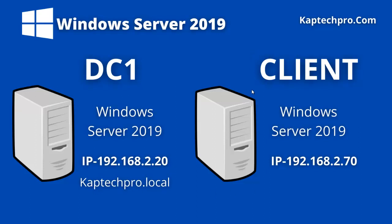Later we will use this client machine for testing purposes. Windows Server 2019 is installed on this machine and we have also assigned it a static IP which is 192.168.2.70. So without any delay, let's jump to our DC machine.